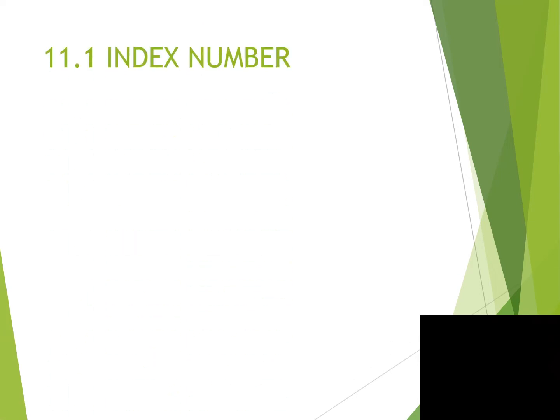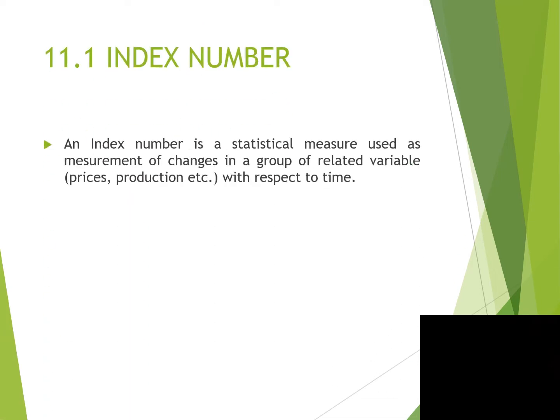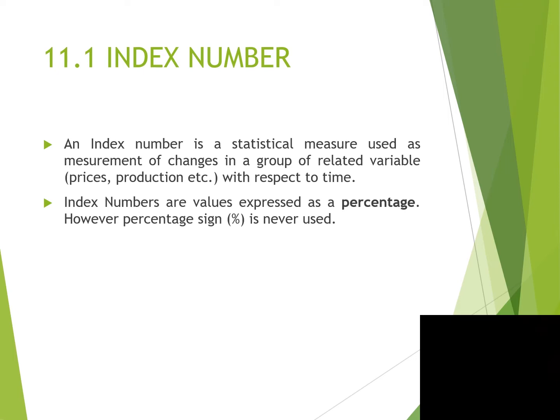An index number is a statistical measure used to measure change in a group of related variables with respect to time. Index numbers are values expressed as a percentage; however, the percentage sign is never used.